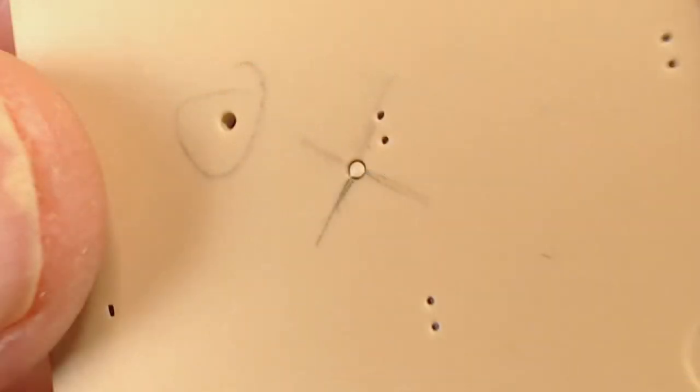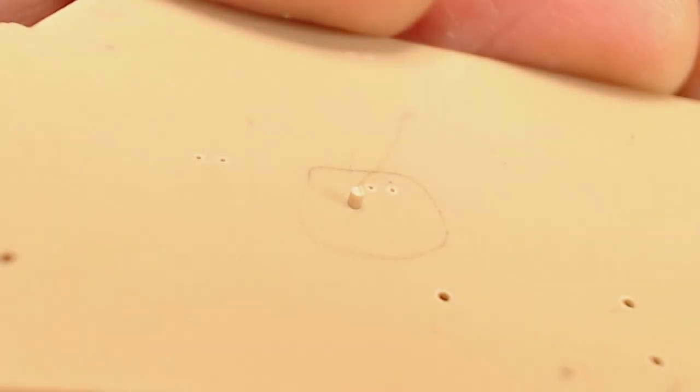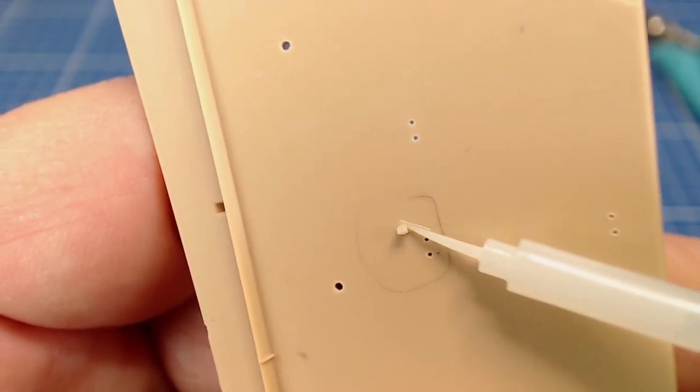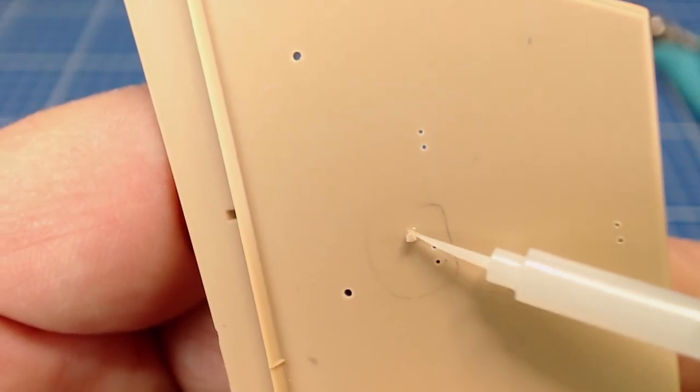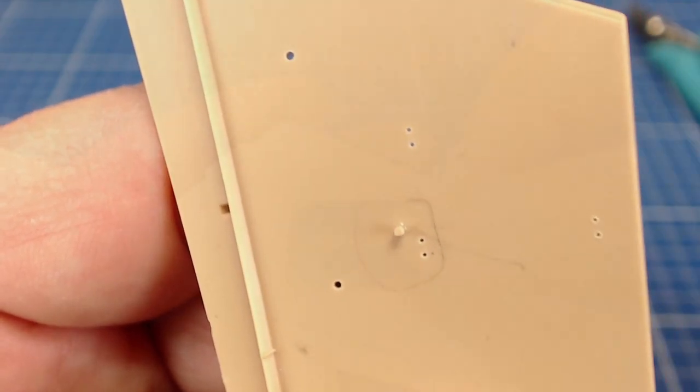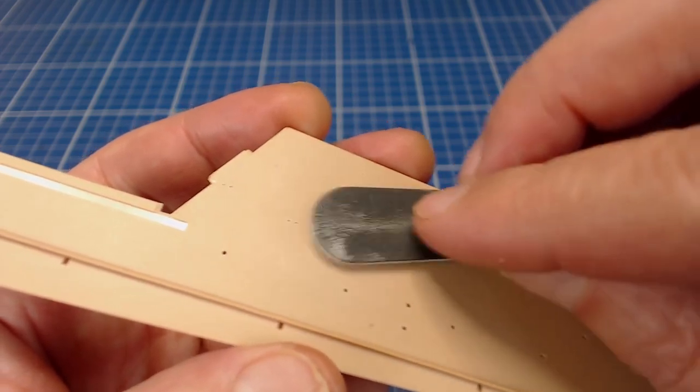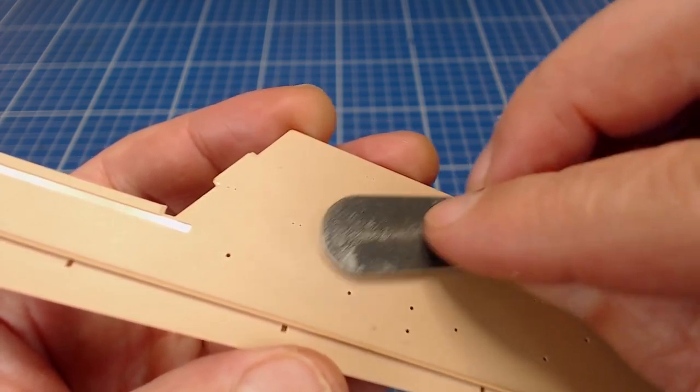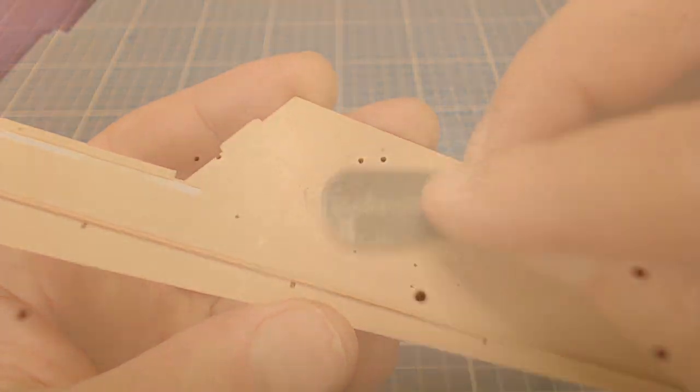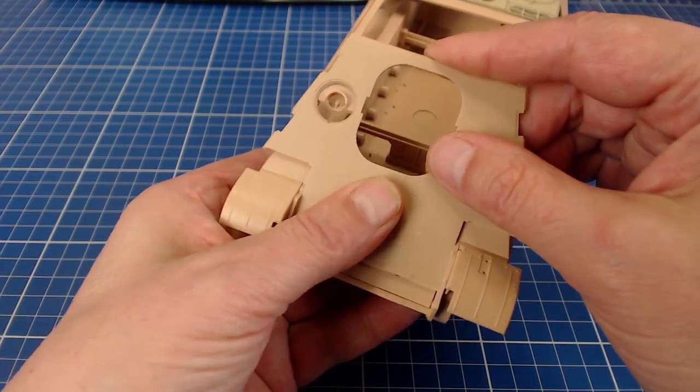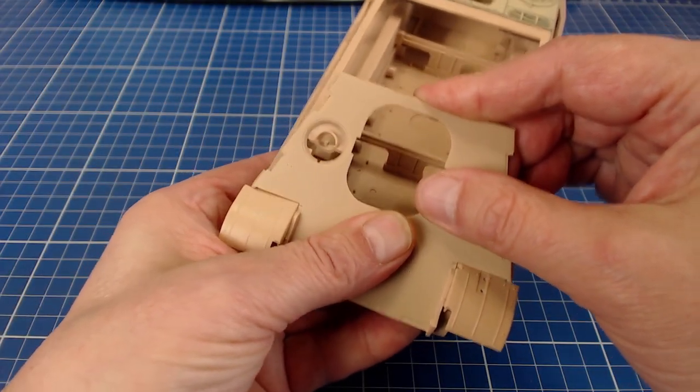We start by jamming a little oversized styrene round stock or stretched sprue into the hole so it sits snugly. We then flood the joint with thin model glue. We make sure to let the glue dry completely, it takes about two hours. Then we slice off the excess with a knife, then finish by sanding the plug so it sits flush. Since the plug fits snugly and the model glue sort of welds it in place, once sanded, the repair is barely noticeable. Once painted, it'll disappear completely.